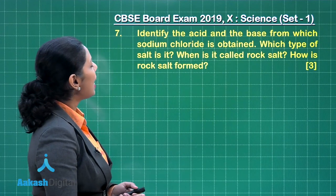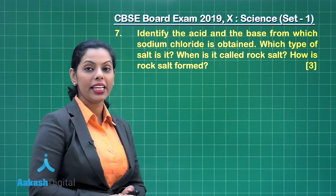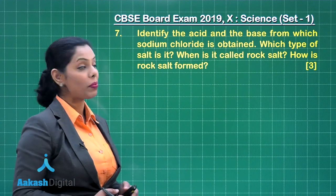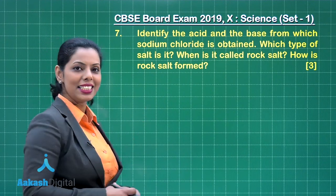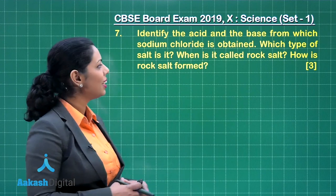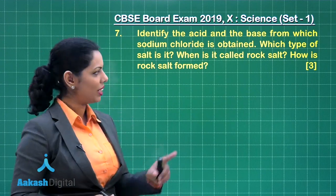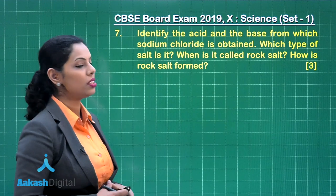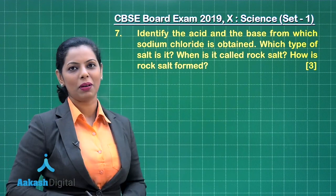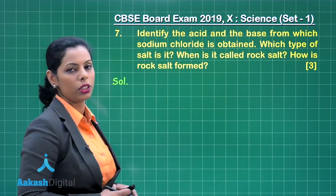Question number 7: identify the acid and base from which sodium chloride is obtained, which type of salt is it, when is it called rock salt and how is rock salt formed. These are the points you have to cover to get full 3 marks. Let us check how to write the solution for this.